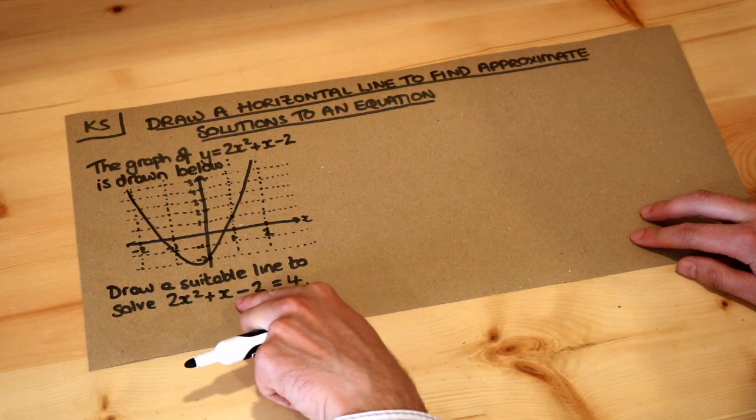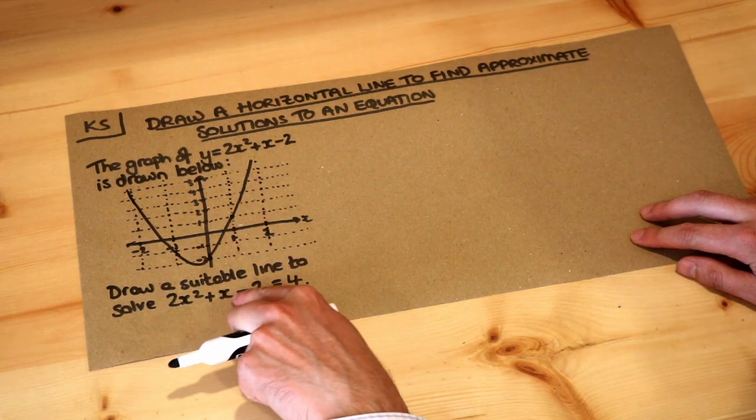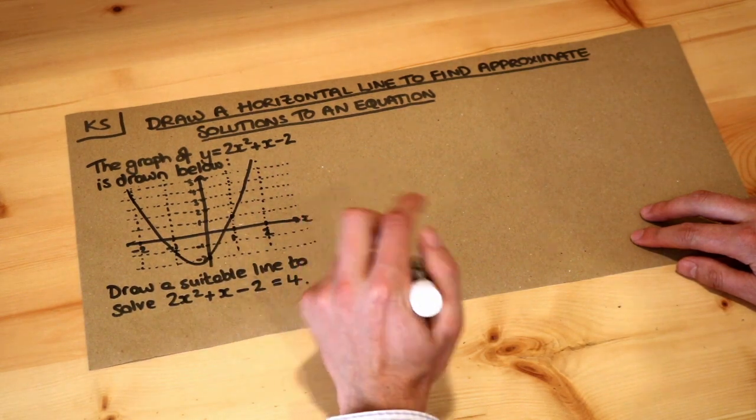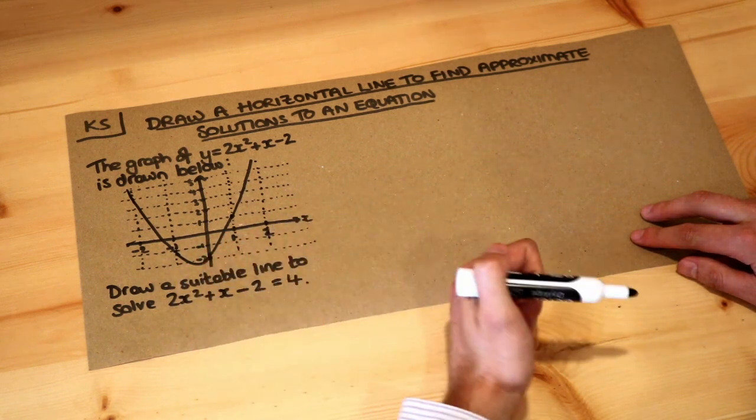You could move the 4 to one side so we have 2x squared plus x minus 6 equals 0, and then you could either factorize or use the quadratic formula to solve this.